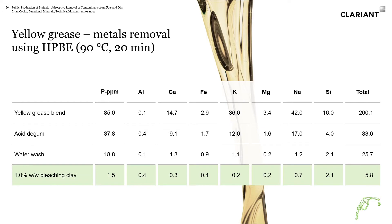Looking at some examples: we started with a yellow grease where the phosphorus was 85 parts per million. That went through an acid degumming and water wash to remove it down to about 19 parts per million. After using 1% by weight clay, that was reduced down to one and a half parts per million — below that two ppm threshold. The life of the catalyst is really going to be extended by removing all that phosphorus, and you can see a significant amount came out with the acid degumming, but a significant portion still needs to be removed with the adsorbent process.